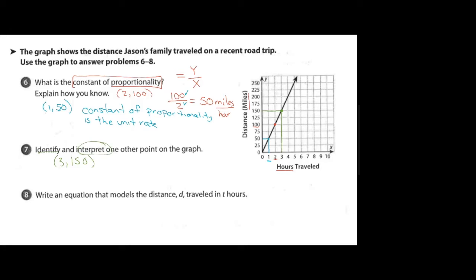Well I identified the point, and so I need to interpret the point. And the interpretation is going to be: after traveling three hours, Jason's family has gone 150 miles.